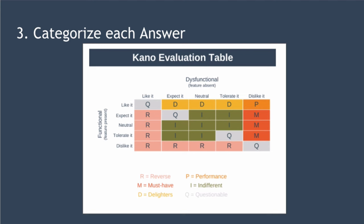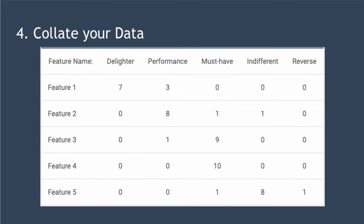Note that there's one additional category in the table: questionable features. These are features you cannot determine a category for because your customer has given conflicting answers. Step four is to collate your data. Based on answers from all customers surveyed, you'll be able to understand how they as a group view the features under consideration. For example, suppose you're considering five features and surveyed ten customers — feature one might have seven people calling it a delighter and three calling it performance, while feature four might have all ten people saying it's a must-have.